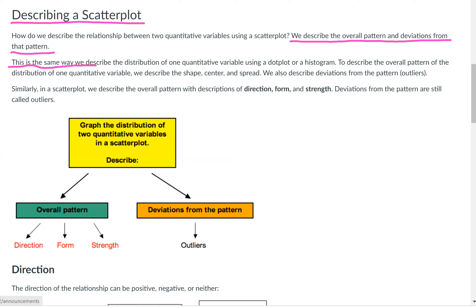We like to describe the overall pattern and deviations from that pattern. This is the same way we describe the distribution of one quantitative variable using a dot plot or histogram. To describe the overall pattern of the distribution of one quantitative variable, we describe the shape, the center, and the spread. We also describe deviations from the pattern or outliers. Similarly, in a scatter plot, we describe the overall pattern with descriptions of direction, form, and strength. Deviations from the pattern are still called outliers.